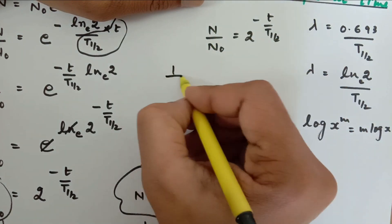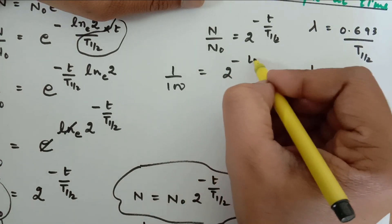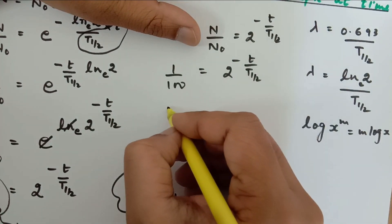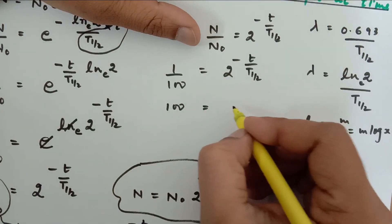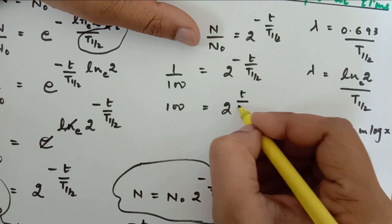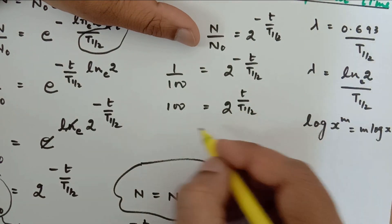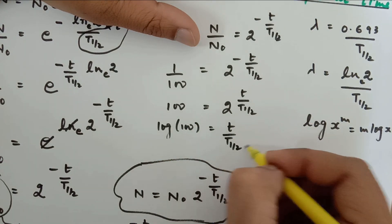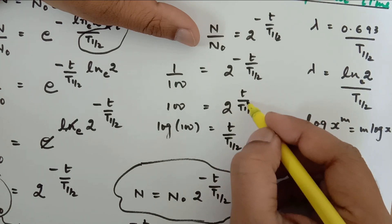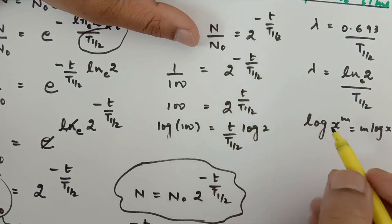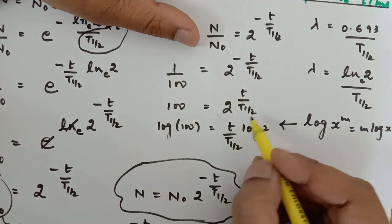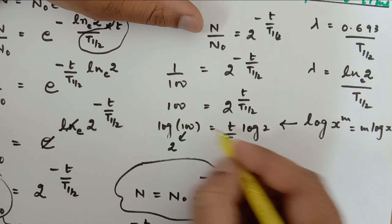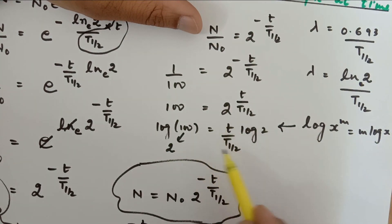But if the ratio is not 2 to the power something — for example 1 upon 100 — this cannot be expressed as 2 to the power something directly. So take the reciprocal: 100 equals 2 raised to t upon t-half, and the negative sign goes off. Now take log on both sides: log 100 equals t upon t-half times log 2. Since log 2 is 0.3010, you can simplify and get the final answer in terms of t-half.